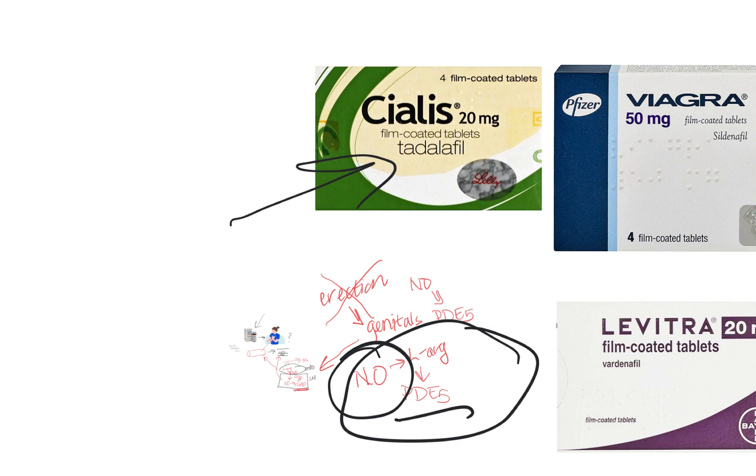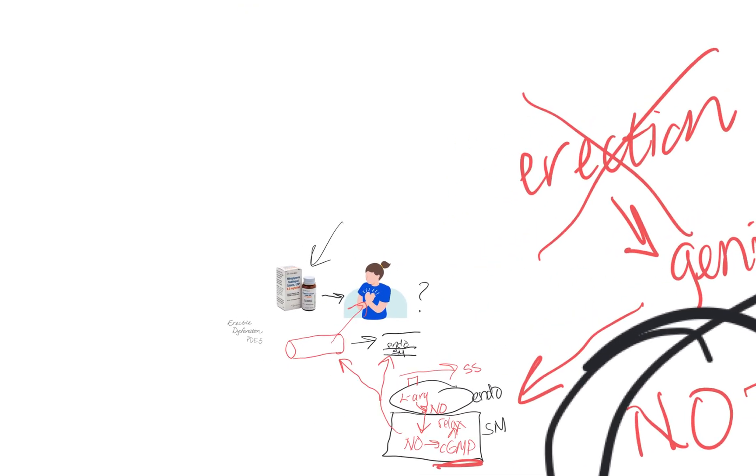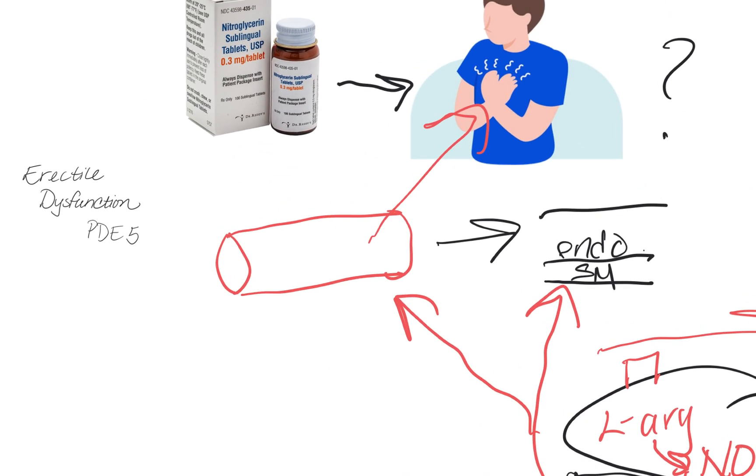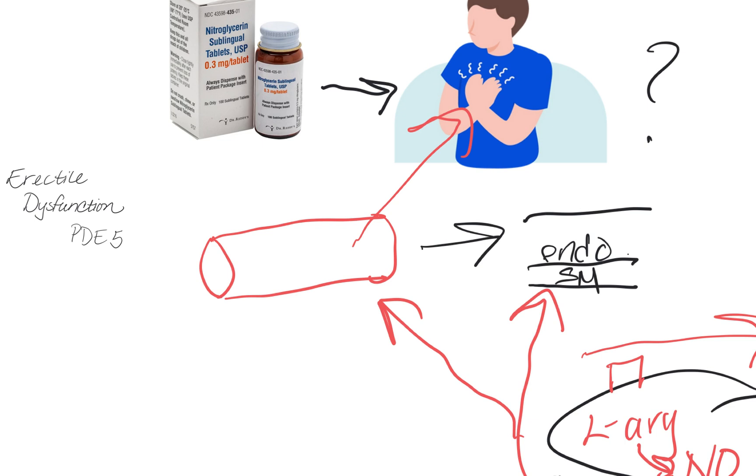we can overtax it, have chest pain, and then what does somebody take for their chest pain? They take their nitroglycerin tablet. You will have nitric oxide on top of nitric oxide, leading to extreme vasodilation and possible shock called pharmacologic shock.